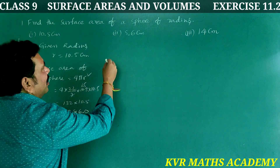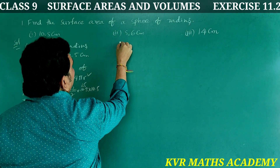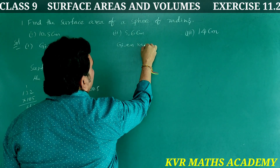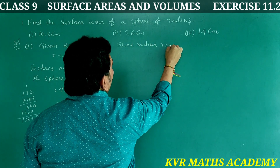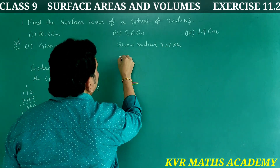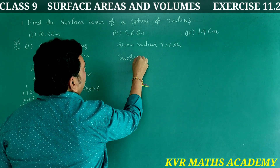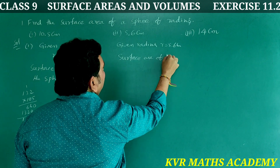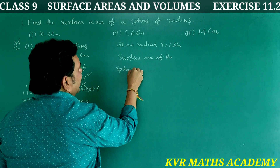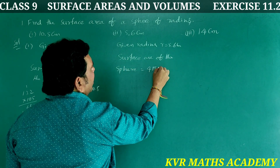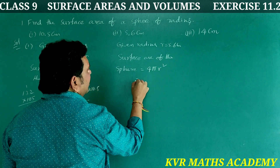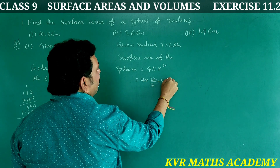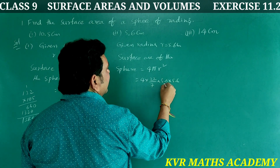In the same way, second one. Given radius r = 5.6 centimeters. Surface area of the sphere = 4πr² = 4 × (22/7) × 5.6 × 5.6.